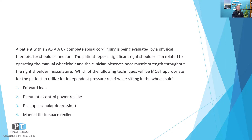A patient with an ASIA A C7 complete spinal cord injury is being evaluated by a physical therapist for shoulder function. The patient reports significant right shoulder pain related to operating the manual wheelchair, and the clinician observes poor muscle strength throughout the right shoulder musculature. Which of the following techniques will be most appropriate for the patient to utilize for independent pressure relief while sitting in the wheelchair? Option one: forward lean. Two: pneumatic control power recline. Three: push-up or scapular depression. And four: manual tilt in space recline.